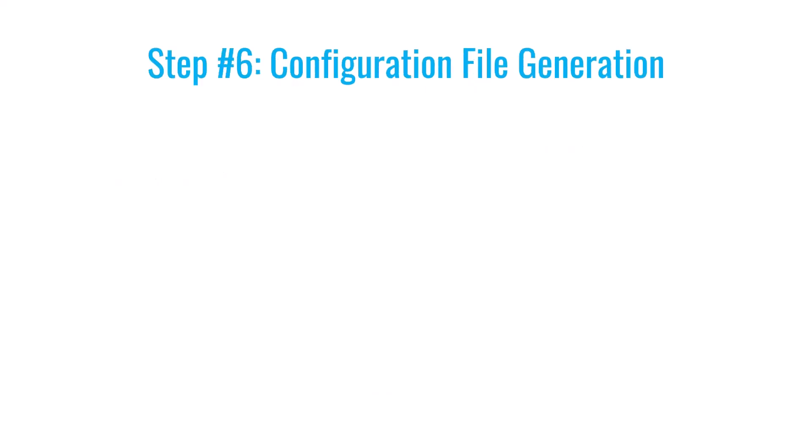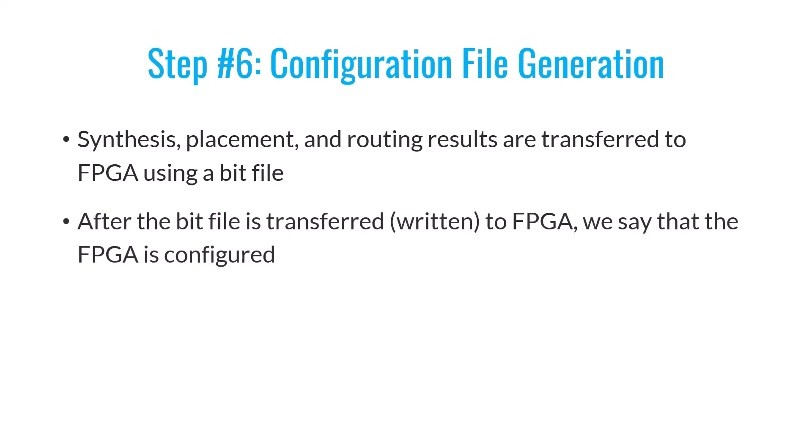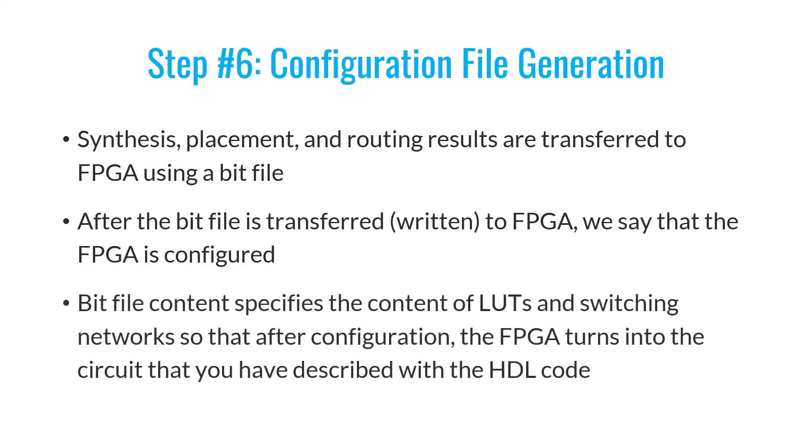Stage six involves creating the configuration file. The outcomes of the synthesis, placement, and routing stages need to be transferred to the FPGA in a specific way. These results are combined into a file known as a bit file, also called a configuration file. Once this bit file is transferred to the FPGA, it configures the FPGA. Essentially, the bit file contains data for configuring the FPGA's lookup tables and switch matrices, transforming the FPGA into the circuit initially described using the HDL language.